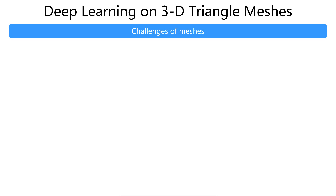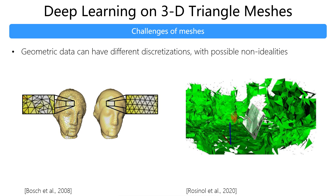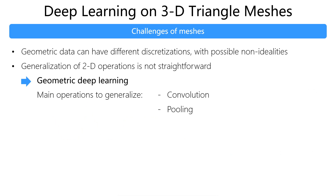Directly using mesh elements as the processing unit requires handling non-idealities and variability in the surface discretization, as well as generalizing 2D operations — mainly convolution and pooling — to a non-Euclidean domain, which relates to the field of geometric deep learning.